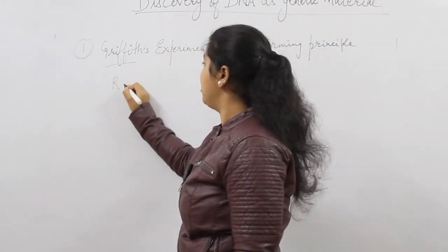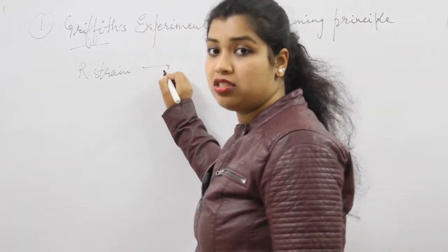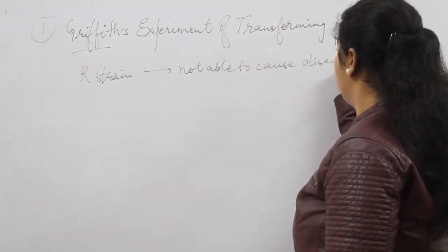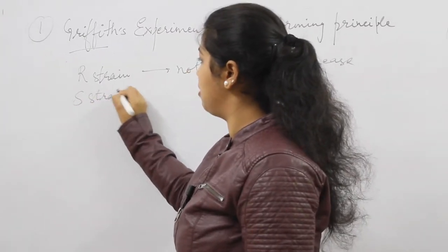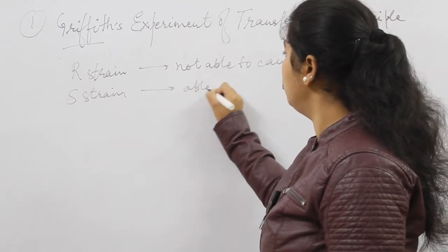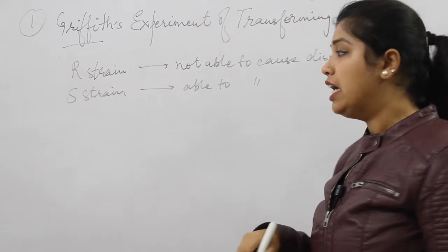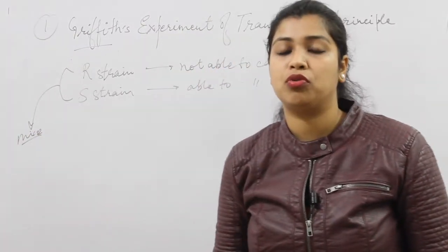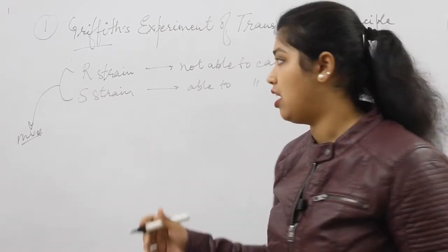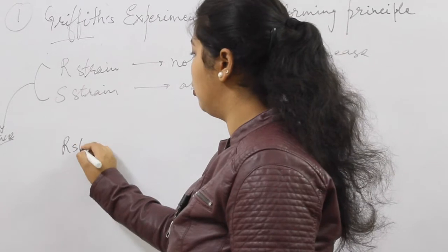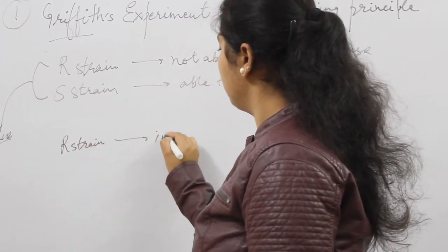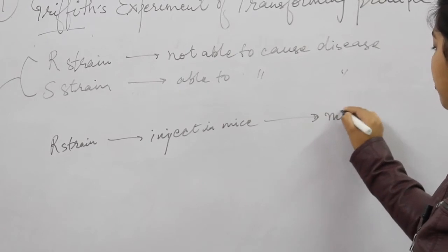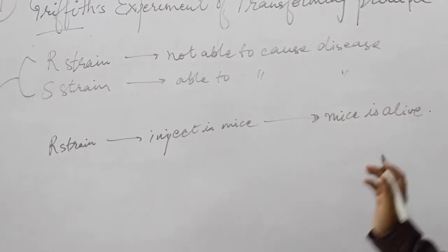As we saw, the rough strain of bacteria is not able to cause disease, whereas the S strain of bacteria, the same Streptococcus pneumoniae, was able to cause disease. So what he did was inject these two strains separately in his experimental setup, which is mice. When he injected the R strain in mice, he saw that the mouse is alive, with no pneumonia.